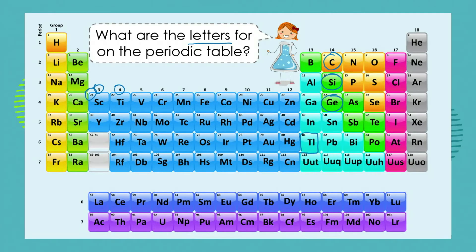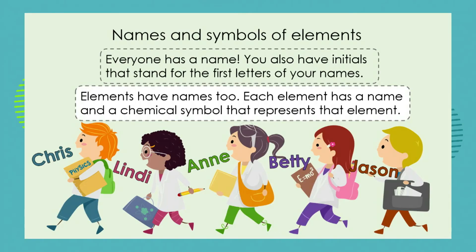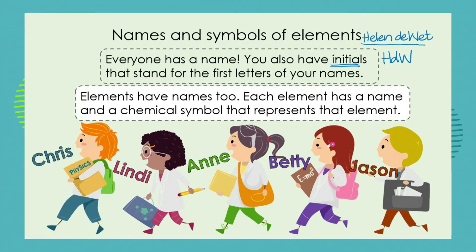Each block has its own letters associated with it, and those letters mean something. Everyone has a name, and not only do you have a name, you also have initials that stand for the first letters of your names. So for example, my name is Helen and my surname is David. So I have a name and I have initials that stand for my name. You will have a name and a surname, so you can work out what your initials are.